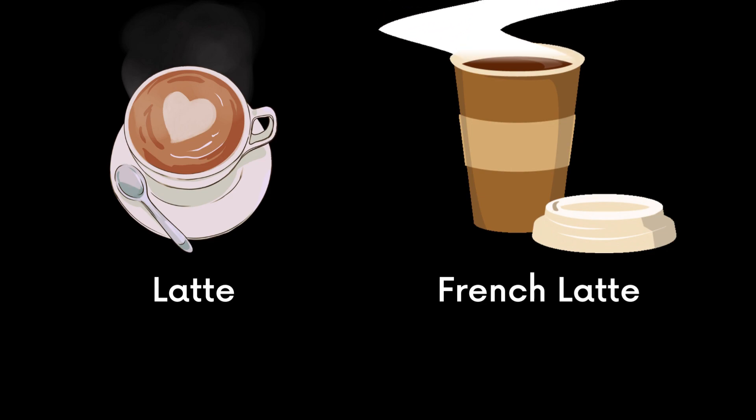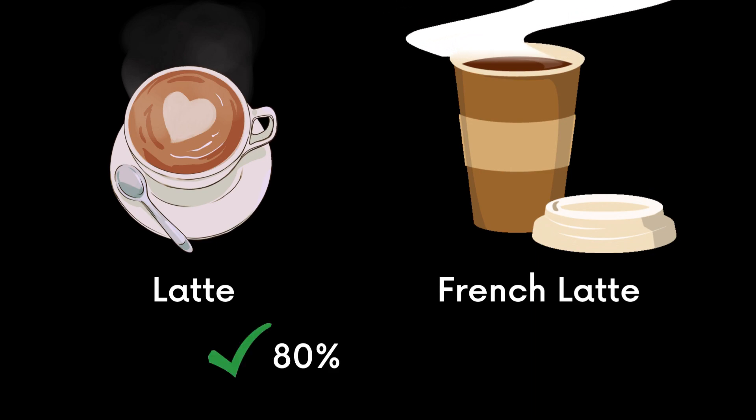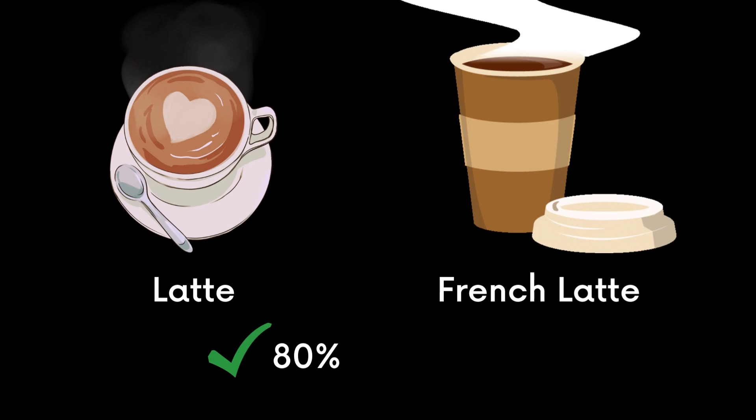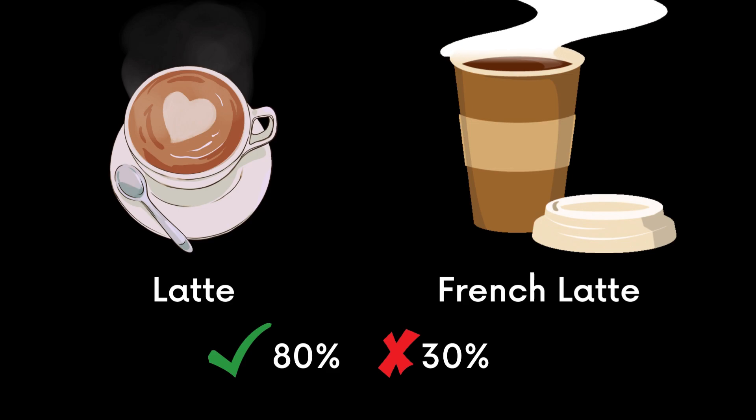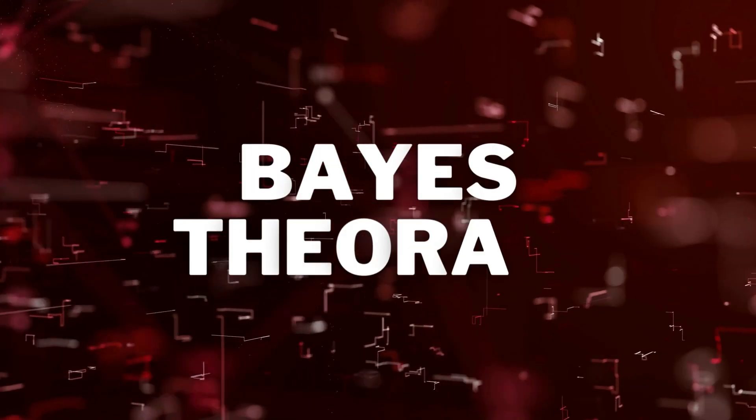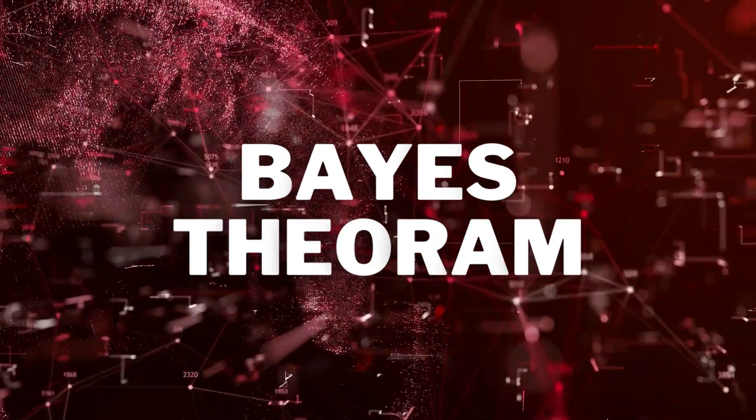You know that the probability of getting a good latte at this coffee shop is 80%, but you also know that the barista is new and there is a 30% probability that a new barista will make a bad latte. So using Bayes theorem we can calculate the probability of getting a bad latte given that the barista is new.